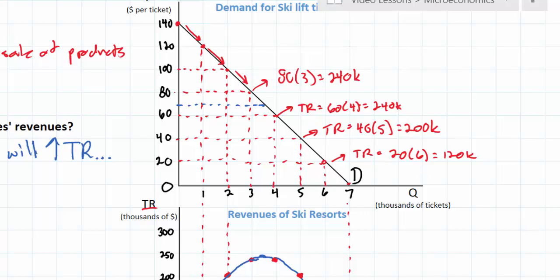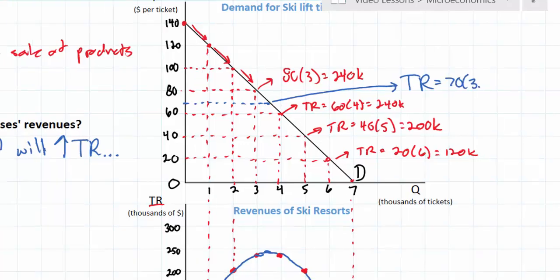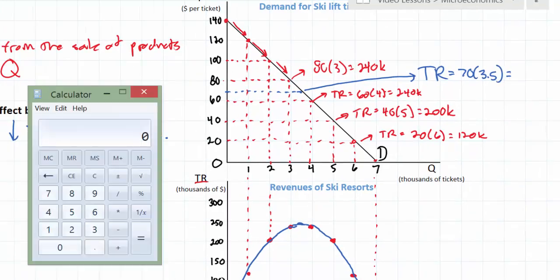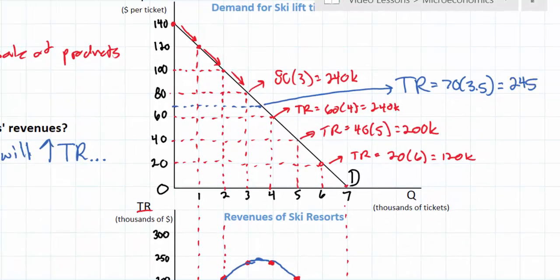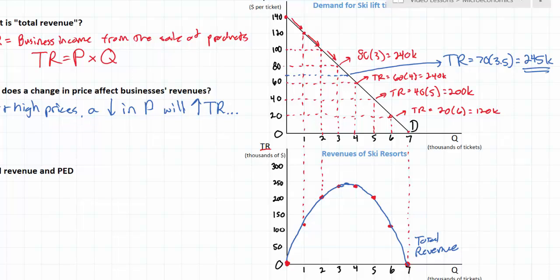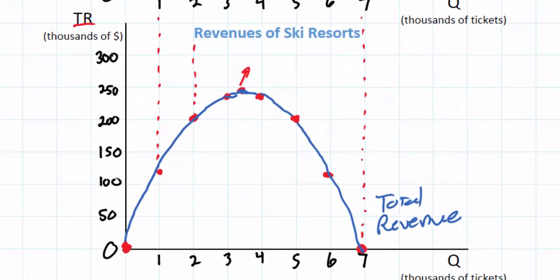In fact we could actually calculate total revenue at $70 because we know that exactly 3,500 lift tickets would be demanded. So total revenue at $70 equals 70 times 3.5. Let's do that calculation. 70 times 3.5 gives us a total revenue of $245,000. So actually this industry's revenues will be maximized at $245,000, right at a price of $70 and at a quantity of 3,500 lift tickets. So $245,000 is the maximum total revenue.